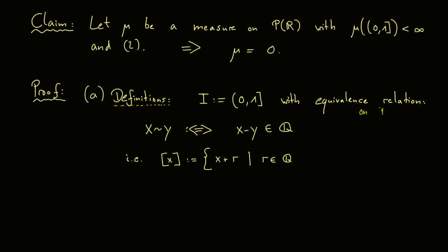This means we don't want to distinguish numbers that only differ by a rational number; we treat them as the same. Therefore, the equivalence class of such an x can be written as x plus all rational numbers r. But keep in mind, we define the equivalence relation on our set I, so we just live on the unit interval. Therefore I have to add that x plus r still lies in the unit interval — I can't add big rational numbers because then I would leave the unit interval. With this we have the well-defined equivalence relation with well-defined equivalence classes.